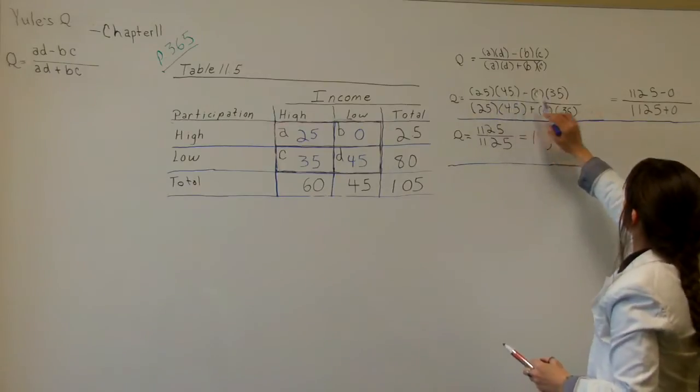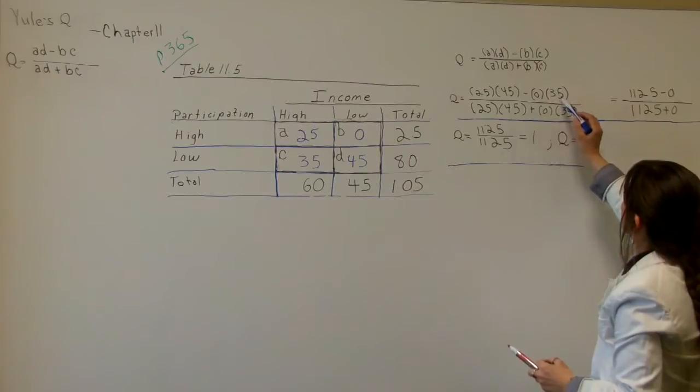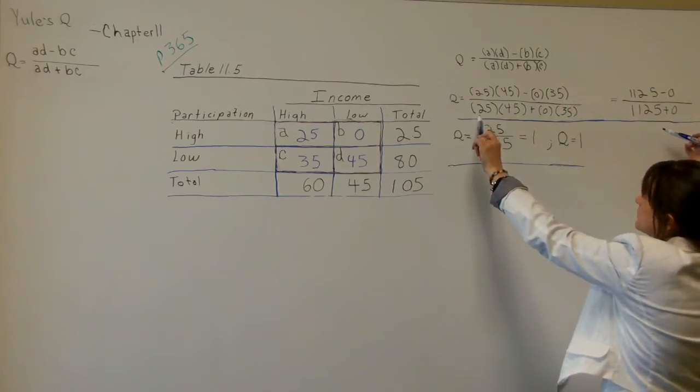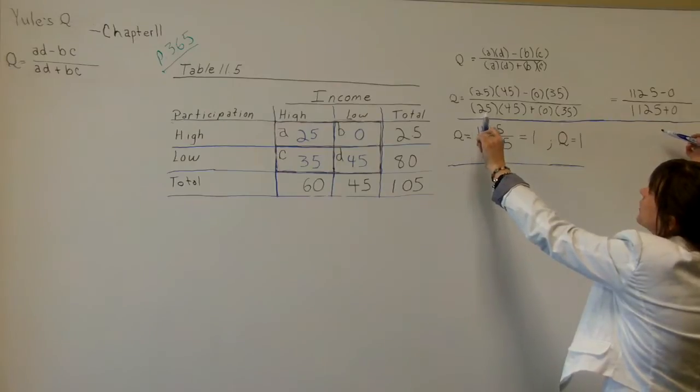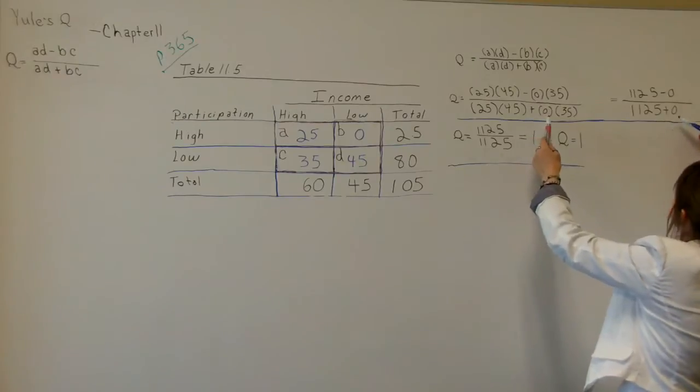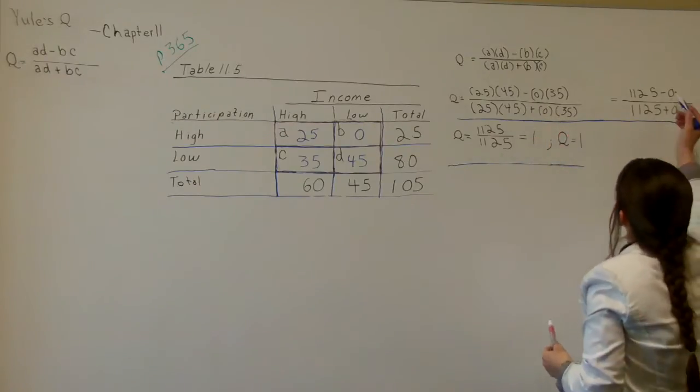First, 25 times 45 equals 1,125, minus 0 times 35 equals 0. Now let's go to the bottom denominator. 25 times 45, which we know from up above, is 1,125, plus 0 times 35 is 0. So we wrote that out.